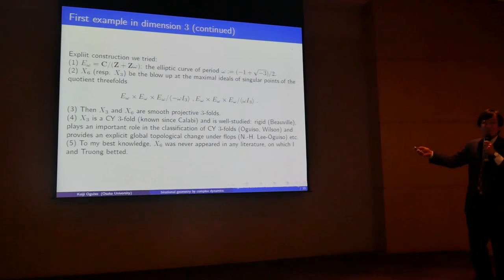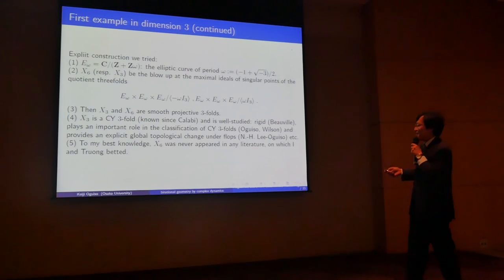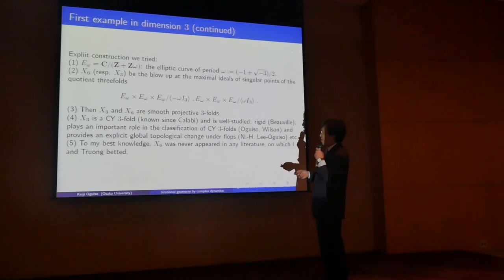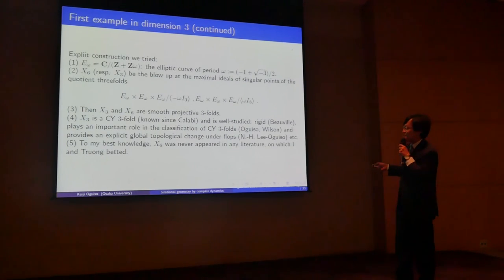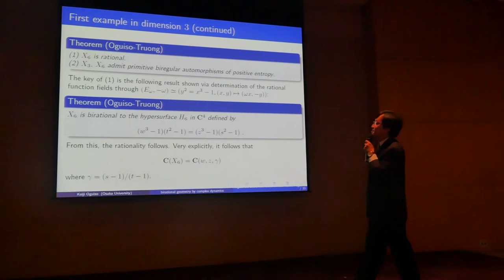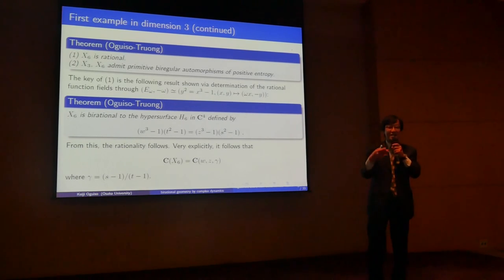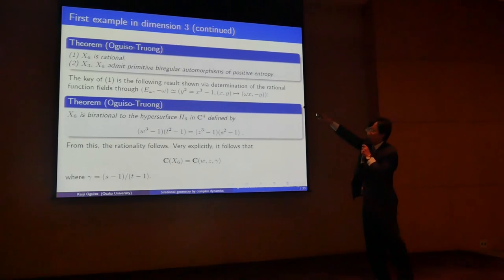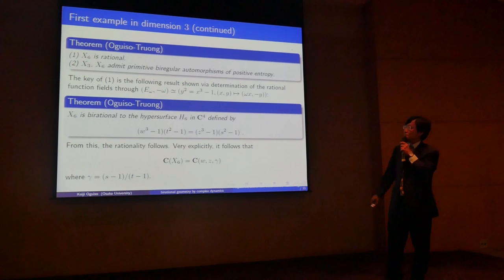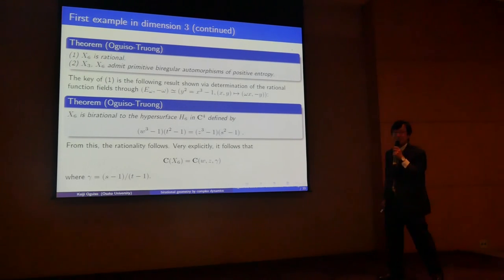We tried to see whether or not this is rational. I cannot say anything about it until resolved. Fortunately, it turns out that X6 is actually rational. So we get at least one rational example. The second part is more theoretically explained — it admits primitive birational automorphisms of positive entropy. I think this is the first such example.